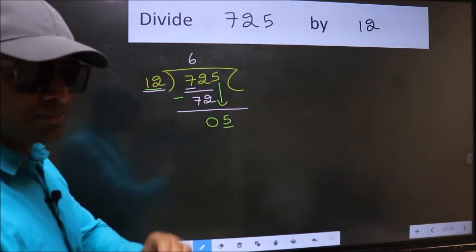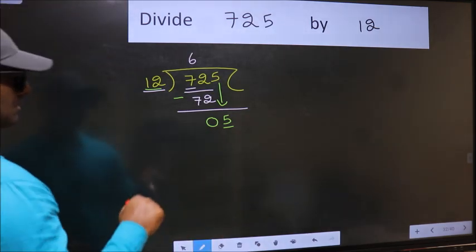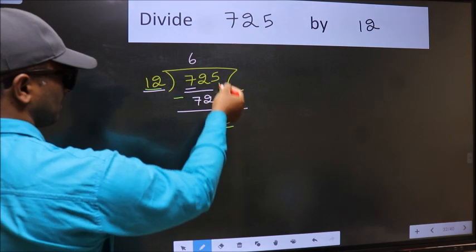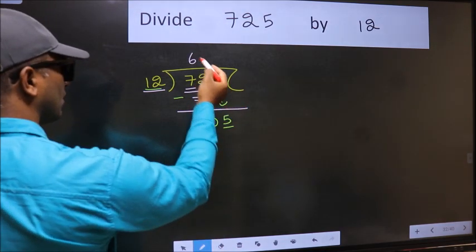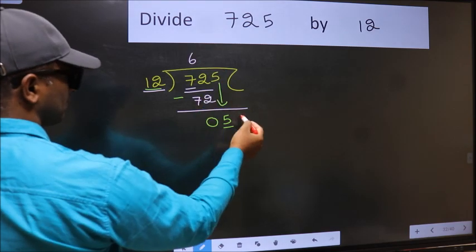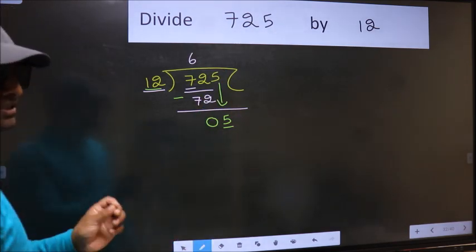Why is it wrong? Because just now you brought this number down. And in the same step, you want to put dot and take 0. Which is wrong.